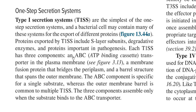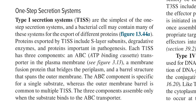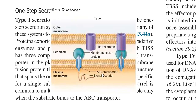Proteins exported by the Type 1 secretory system include the S-layer subunit, which can be seen in gram-positive, gram-negative, and dominantly in the Archaea group of bacteria. Certain degradative enzymes and proteins involved in pathogenesis are also exported via Type 1 secretion. Each Type 1 secretion system has three different components: an ABC (ATP-binding cassette) protein acting as a transporter in the plasma membrane, a membrane fusion protein bridging the periplasm, and a barrel structure spanning to the outer membrane.